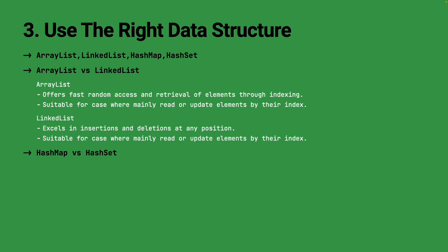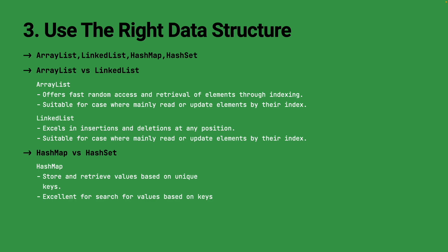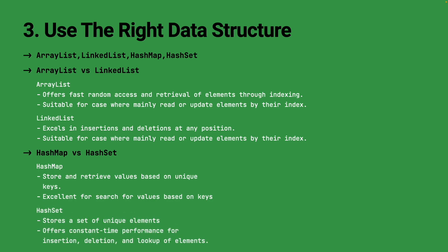Now let's talk about HashMap and HashSet, which are fundamental data structures for dealing with key-value pairs and sets of unique elements respectively. HashMap is an associative array that allows you to store and retrieve values based on unique keys, providing fast key-based access with O(1) average time for get and put operations. HashSet stores a set of unique elements, ensuring no duplicates are present, and offers constant time performance for insertion, deletion, and lookups. Both internally use hash functions to distribute elements, contributing to their constant time performance characteristics.